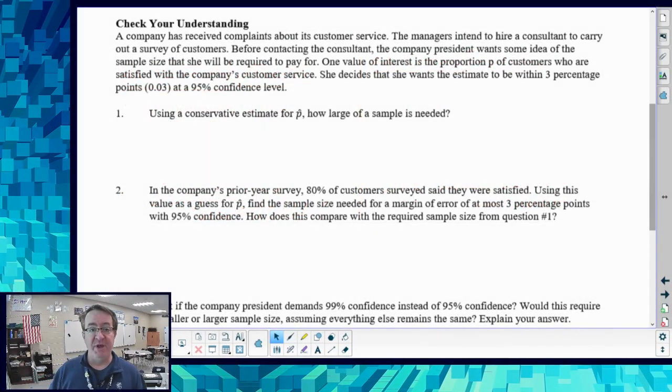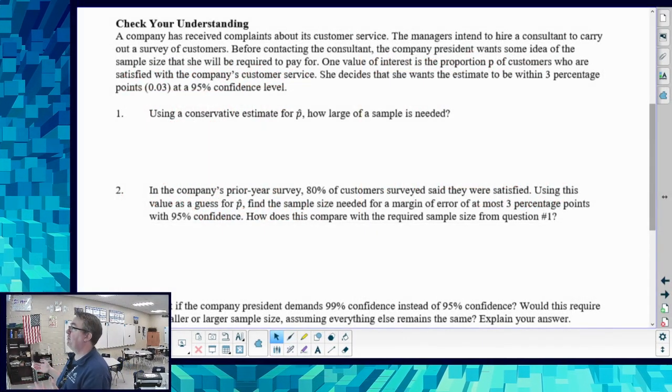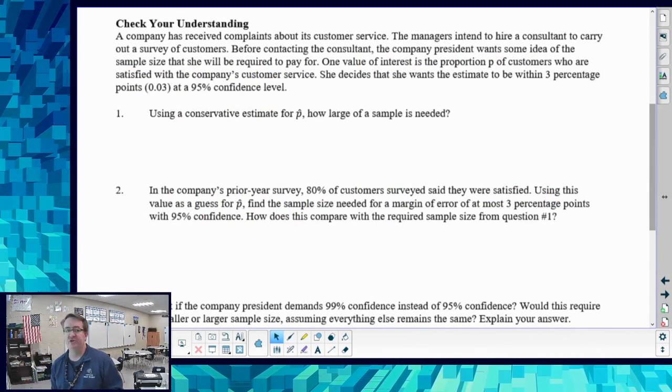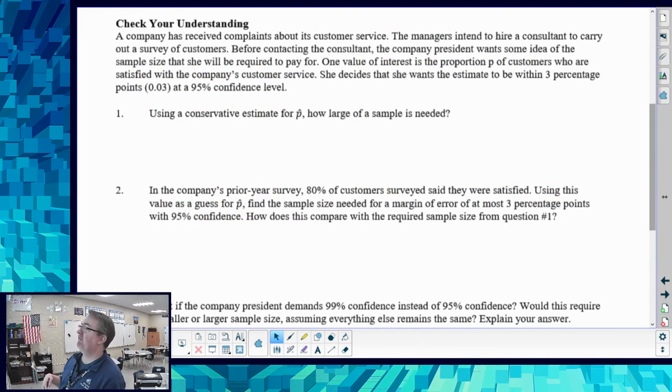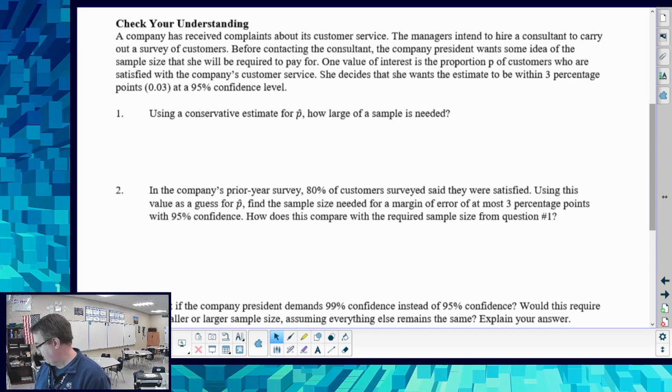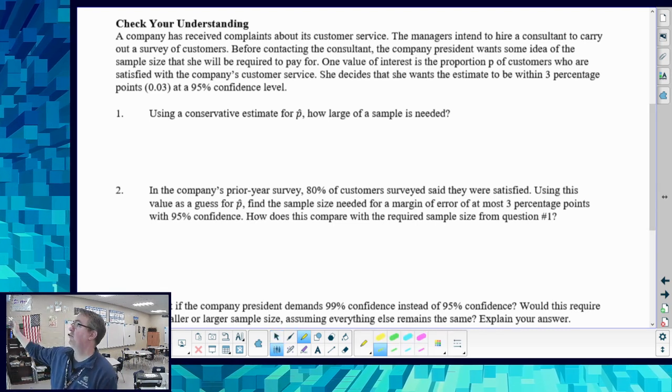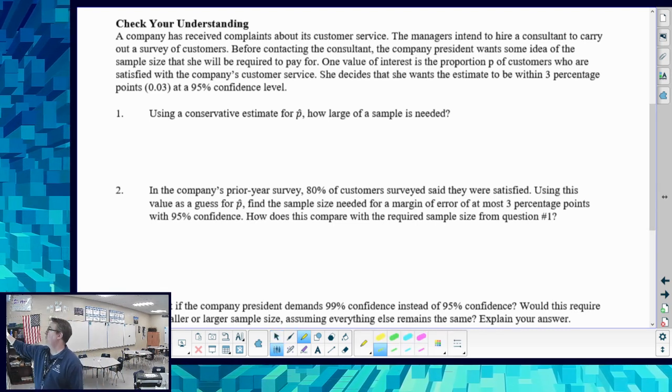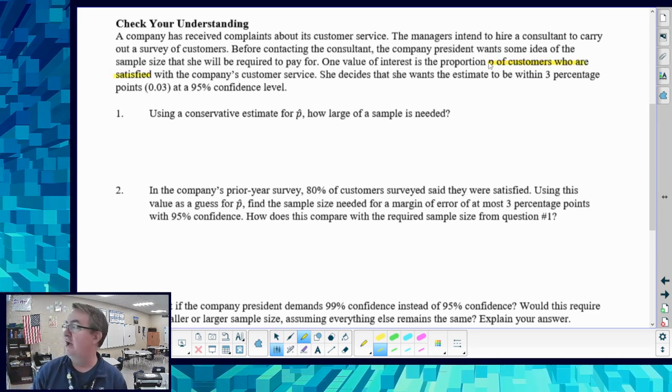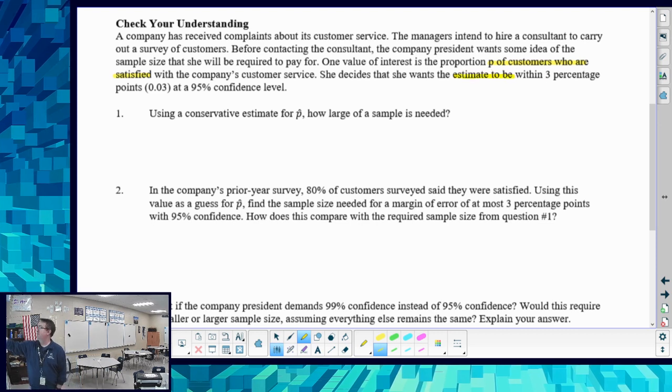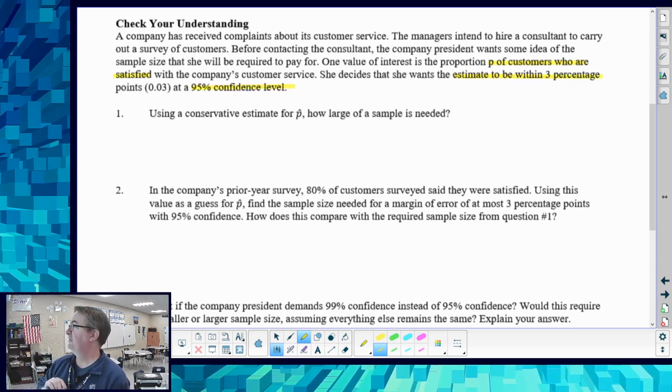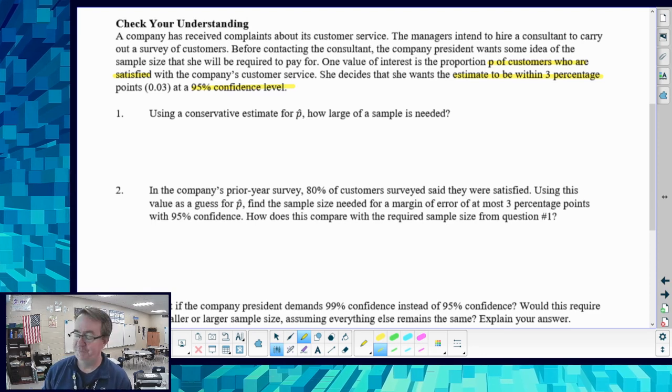All right, welcome back. I hope you gave it a shot. So the problem here is this: you want to do a customer survey thing. Your manager says, hey, I want to have it be within three percentage points. How do you set this up? We're going to use a conservative estimate. We want the proportion of customers who are satisfied. We want the estimate to be within three percentage points and we also want confidence level of 95%.